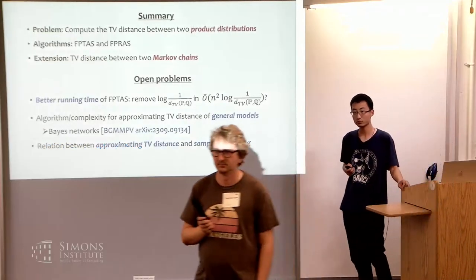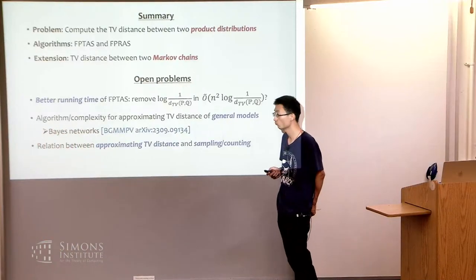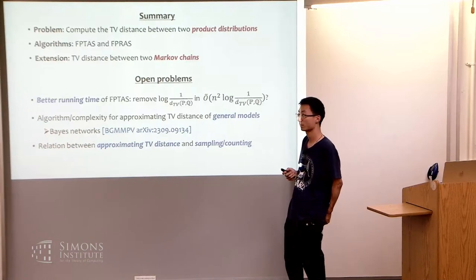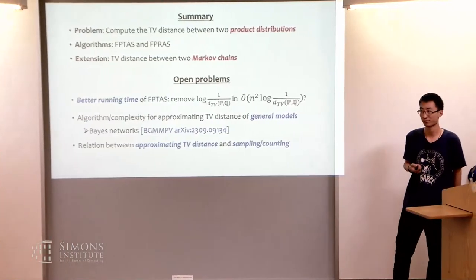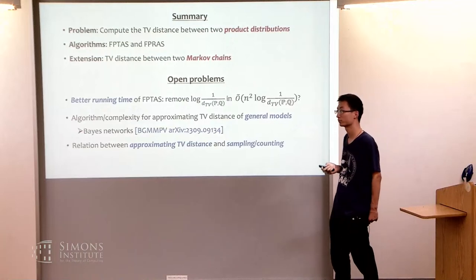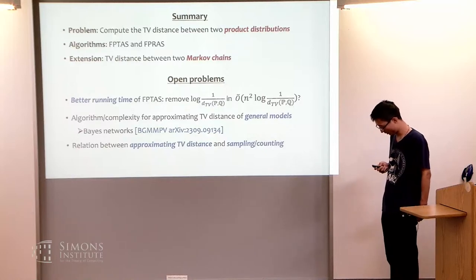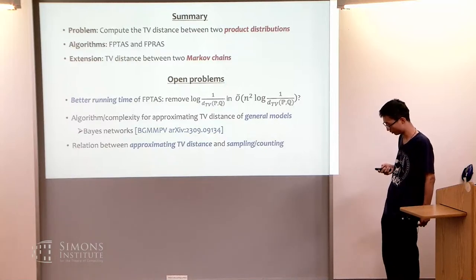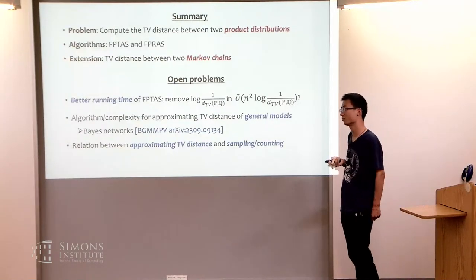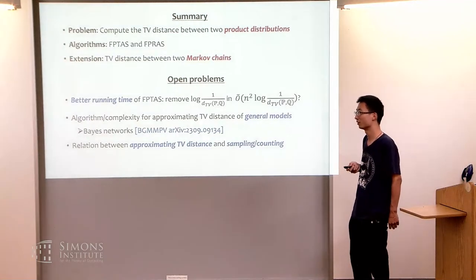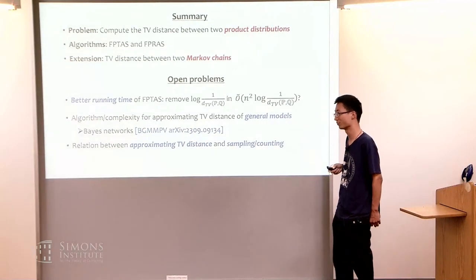Q: For the deterministic algorithm, don't you need to know the answer to set the parameter? A: We can use a lower bound. Q: What about mixture models and probabilistic circuits? A: Our deterministic algorithm requires computing conditional marginal distributions. For graphical models with unbounded treewidth, computing the marginals is not easy. For tractable probabilistic circuits like products of independent Bernoullis, it might work, but I haven't thought about mixtures of those.